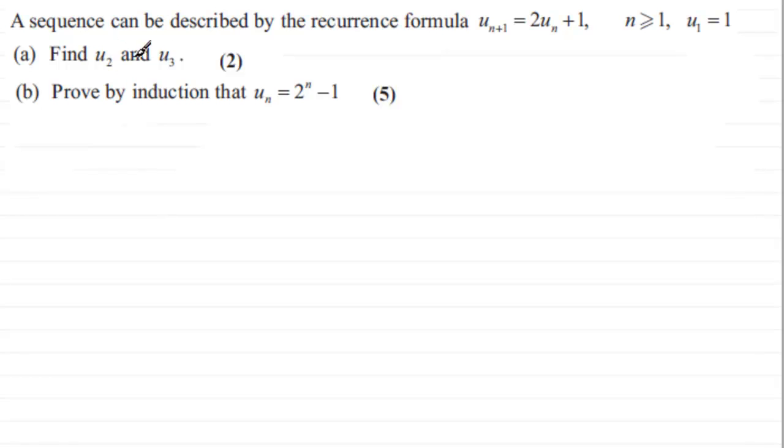Well, finding the first two terms, u2 and u3, should be fairly straightforward. All we've got to do to get u2 is just let n equal 1. So when n equals 1, you've got u2 here. u2 equals 2 times u1. u1 we're told is 1, so it's going to be 2 times 1, and then we've got plus 1. And so obviously we've got 2 plus 1, which is 3.